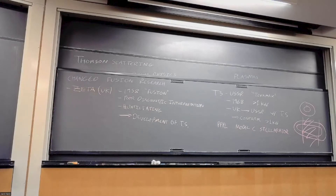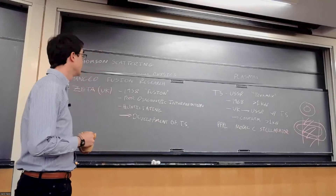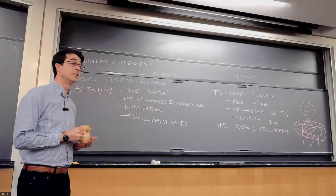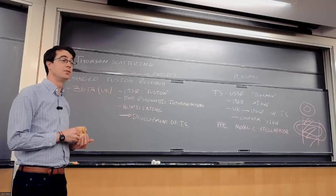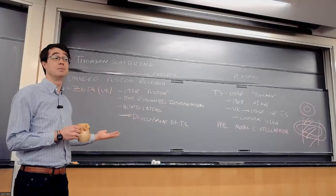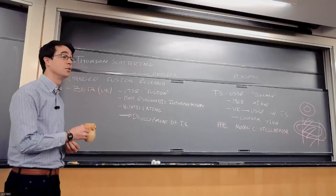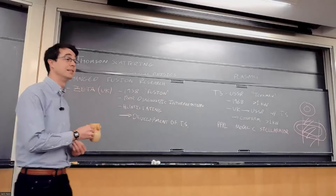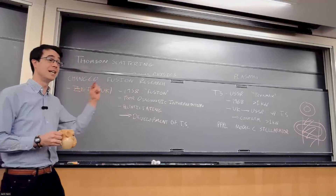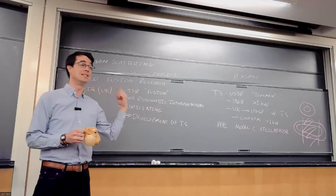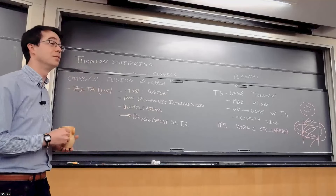What diagnostics did Zeta use? Mostly neutron diagnostics — they had neutron detectors, and they were looking for neutrons because they thought if we have neutrons, there must be fusion. There were fusion reactions happening, but they were beam-target fusion reactions caused by MHD instabilities; they were not isotropic. If they had more neutron detectors, they could have detected the anisotropy, and that would have been a key signature that they didn't have thermonuclear fusion.